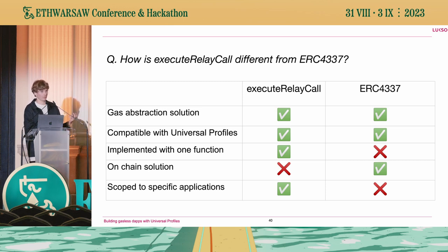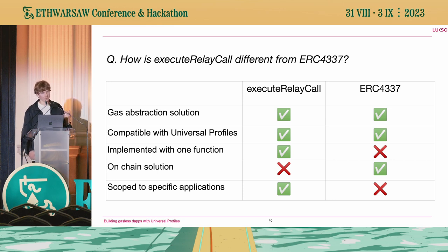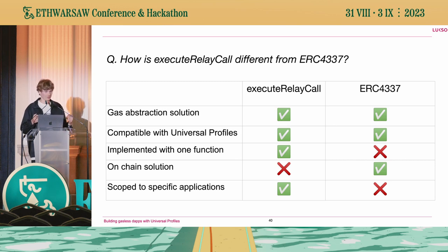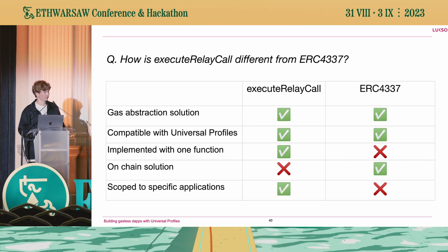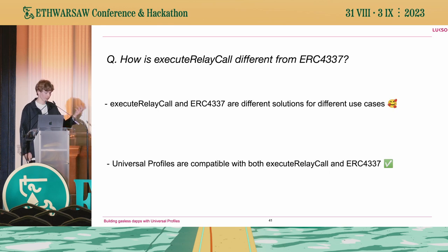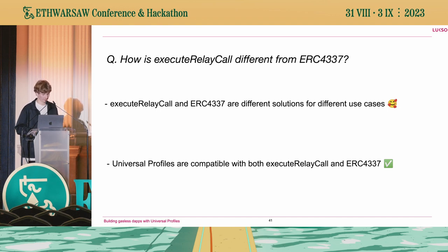Being off-chain gives you more control over how the transaction relay service works. You can run a relayer specific to your application, so you're only paying for the gas fees of your own users — not someone else's dApp. As people start building dApps and trying to get new users, thinking about how to onboard users and building in this gasless component is how we start getting more users of blockchain technology. These are just two different solutions for different use cases — neither is necessarily better than the other, they just have different pros and cons. Both are compatible with Universal Profiles, so whether you want a transaction relay service, ERC-4337, or both, it's entirely up to you.